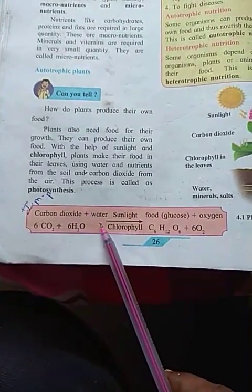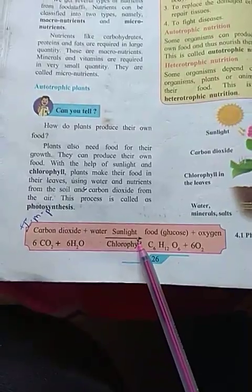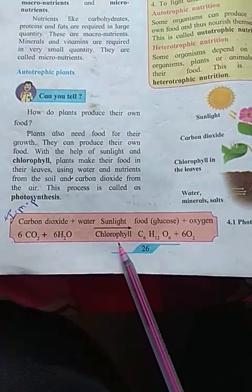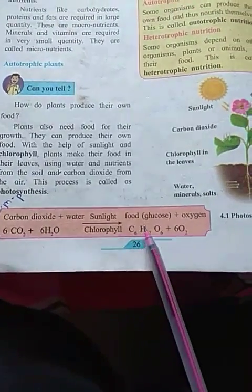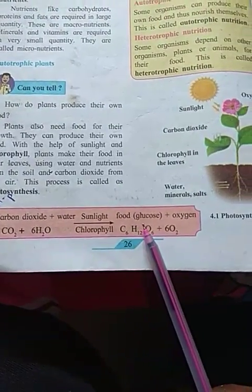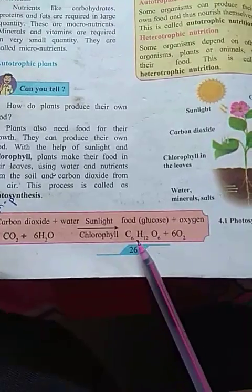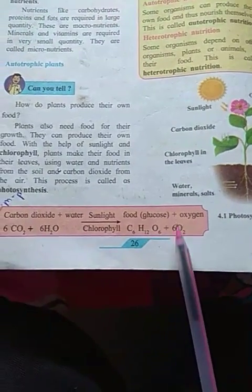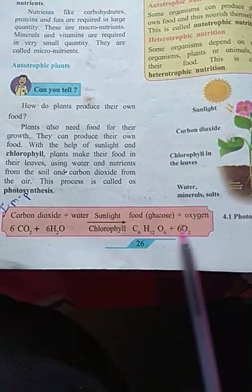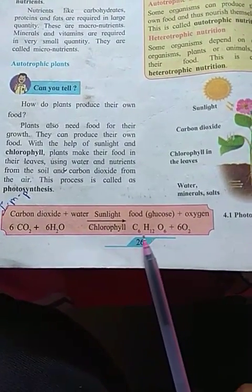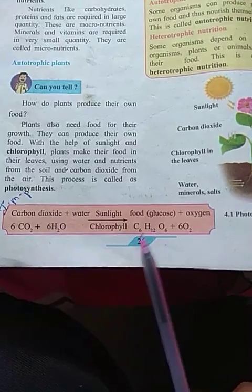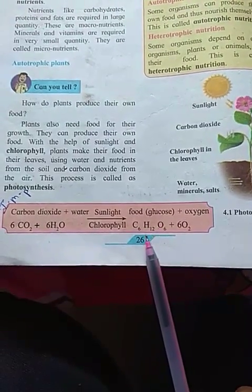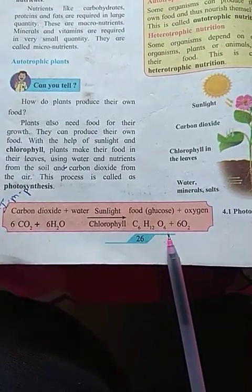The chemical reaction for photosynthesis: carbon dioxide plus water, in the presence of sunlight and with the help of chlorophyll, produces glucose (C6H12O6) plus oxygen is released.